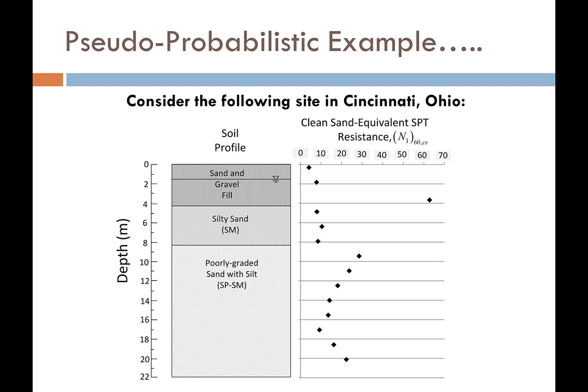He said he'd been told I knew how to do probabilistic liquefaction hazard analysis, or PLHA — the same as performance-based engineering. Then he shared some details. He said he had a site: a client building a large industrial facility near Cincinnati, Ohio, right on the Ohio River. The soil profile showed down to about 22 meters of coarse-grained material with varying fines, with corrected SPT blow counts ranging from about 5 to 30. The soil was loose to medium dense, and the water table was at less than two meters depth.